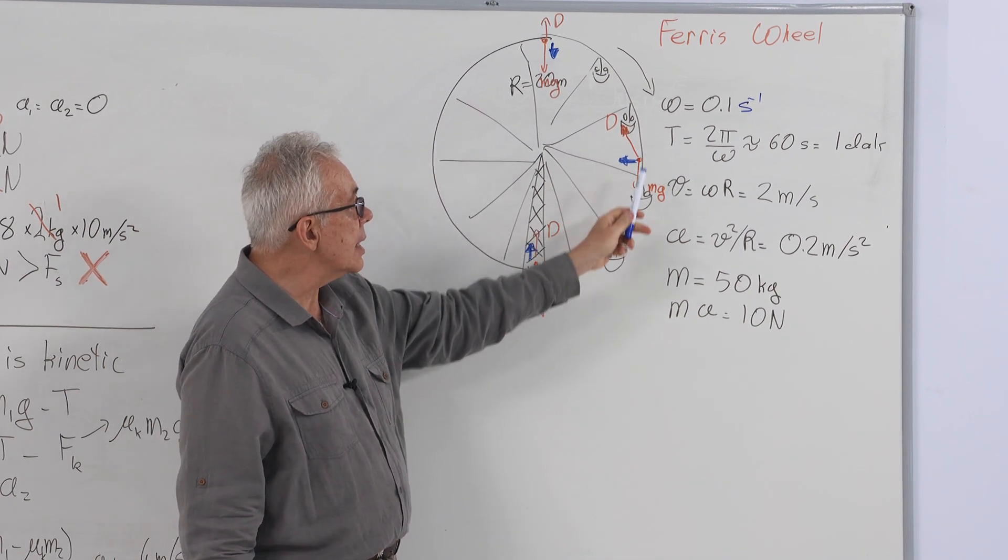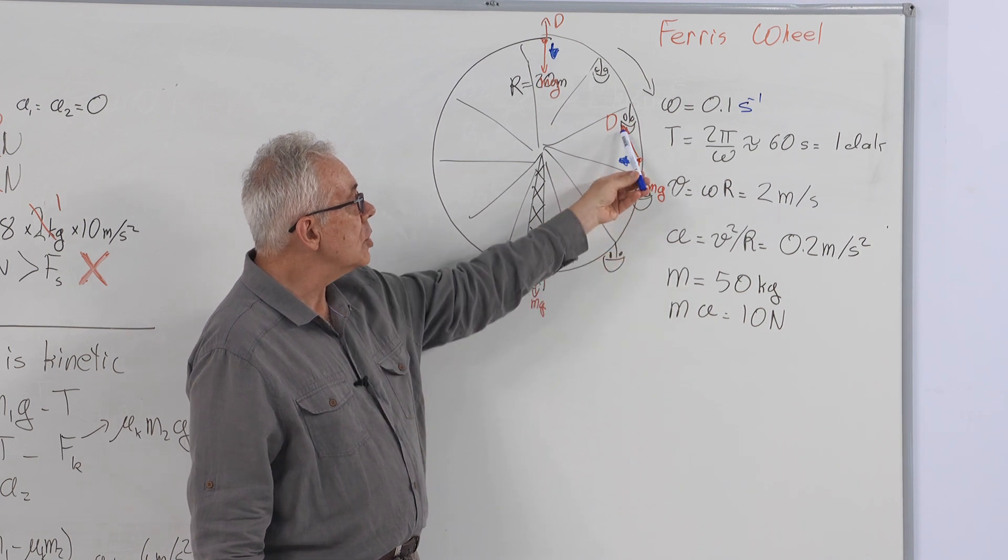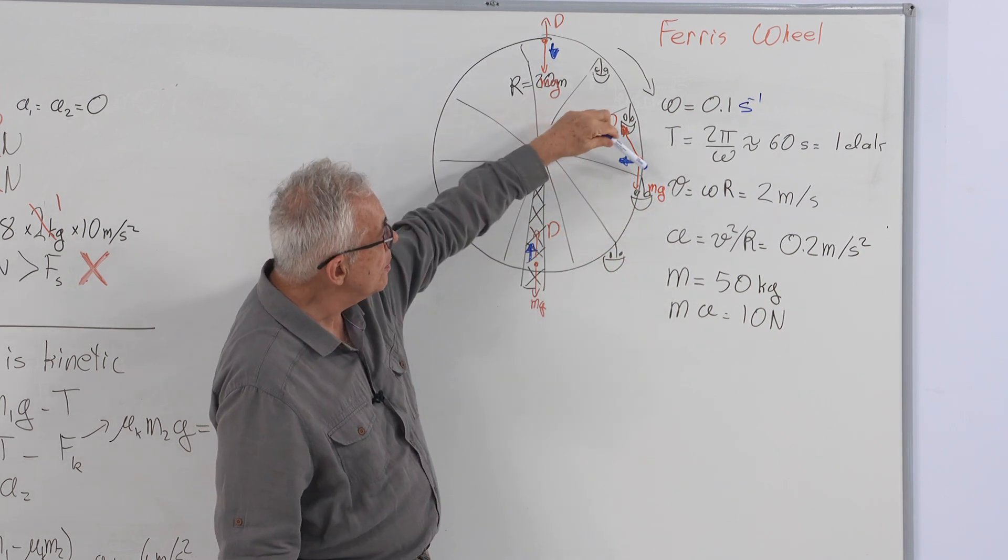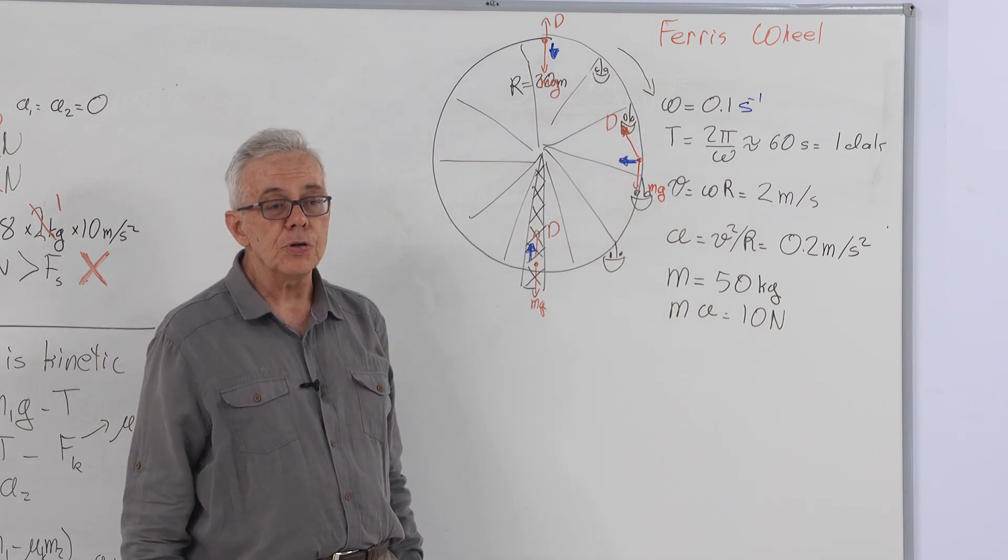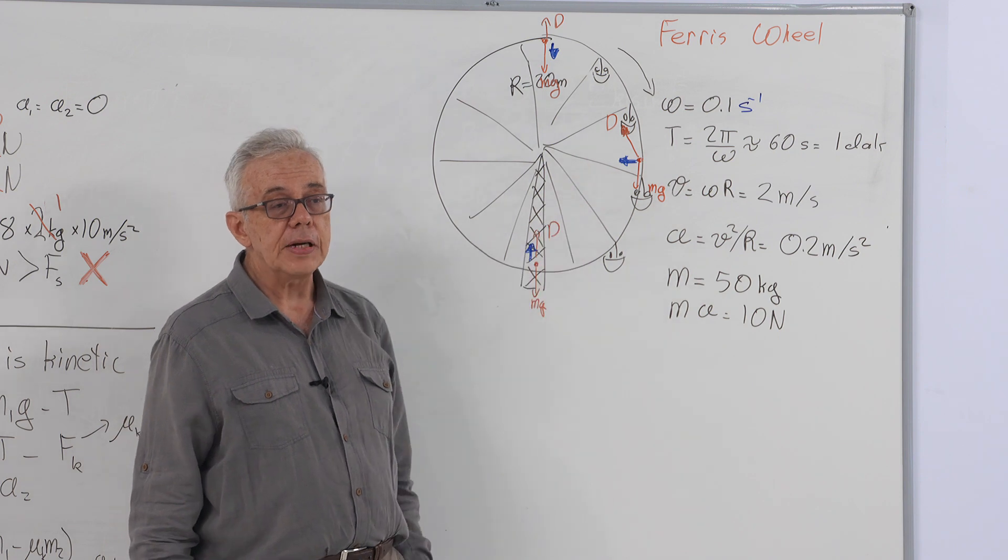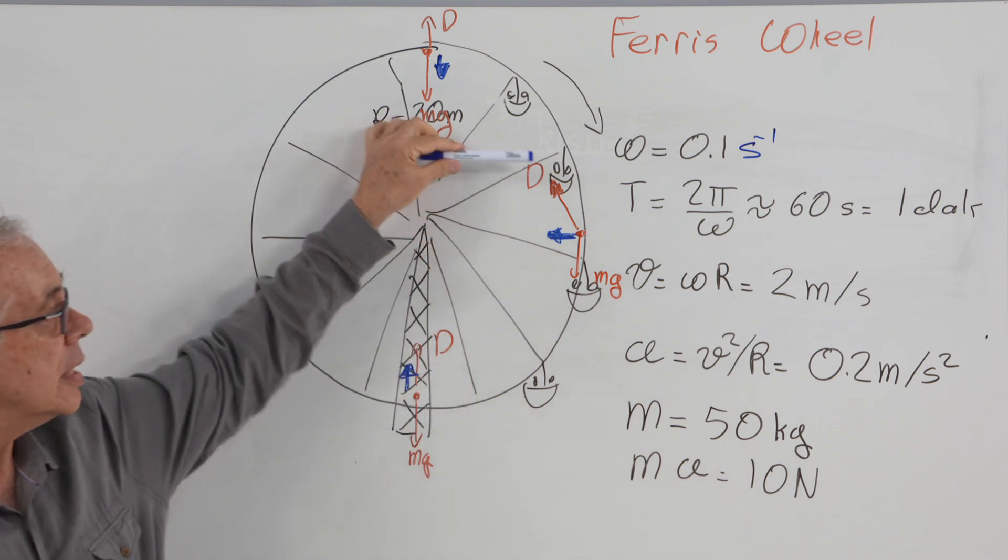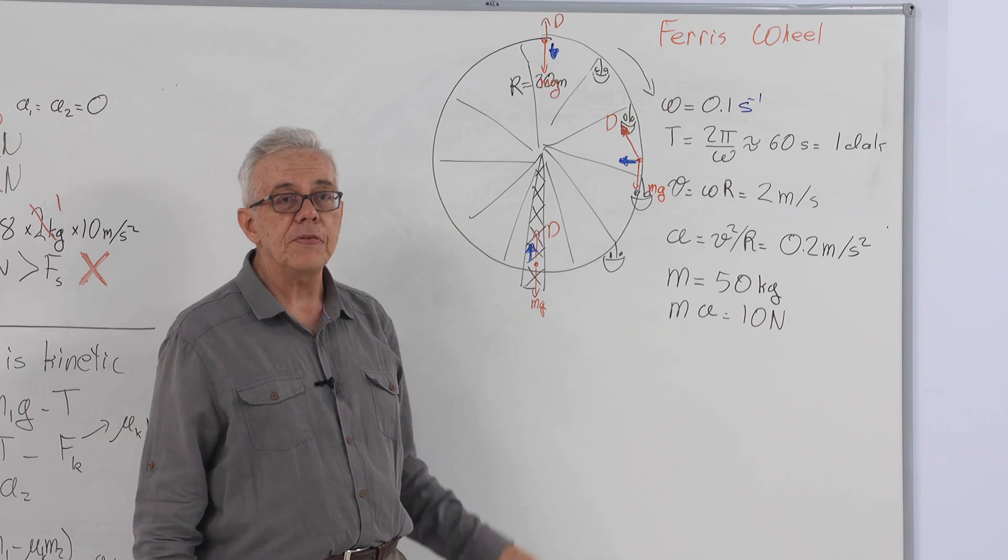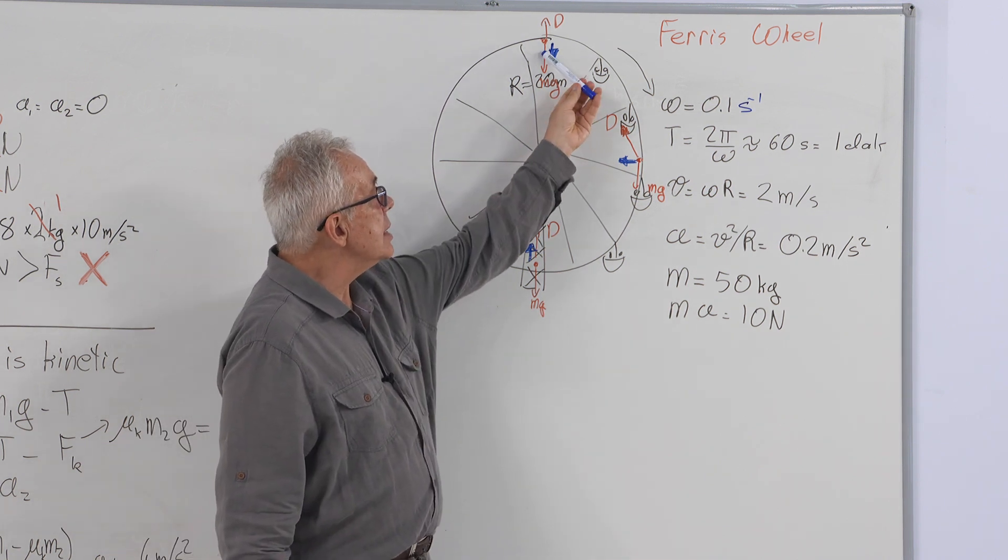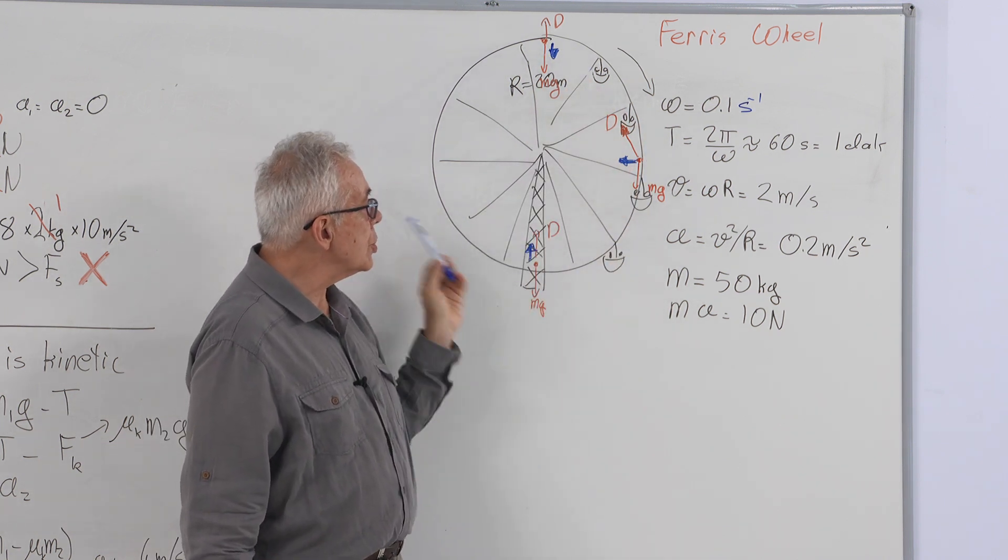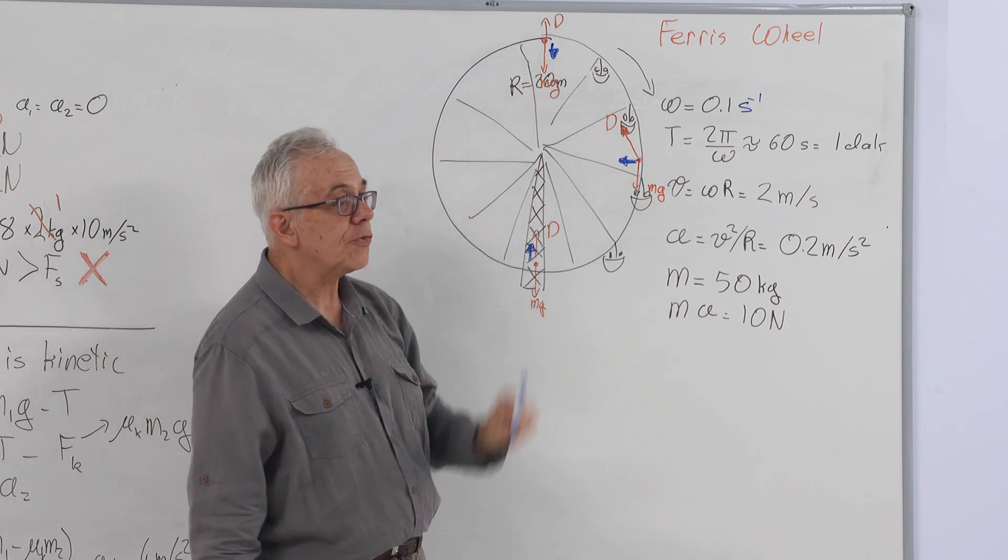When he is at the side here, gravitational force, again, 500 newtons down. Contact force is compensating for this gravity, so it has a perpendicular vertical up component, which is 500 newtons. And the horizontal component, which is 10 newtons, the value is about 501 newtons.